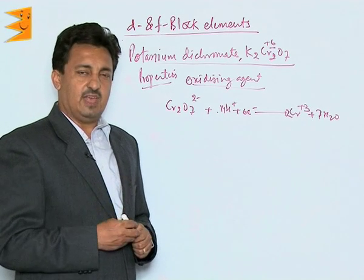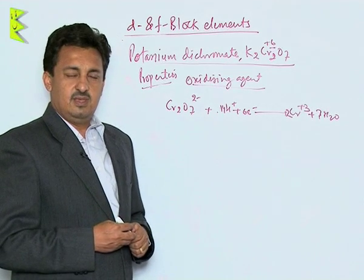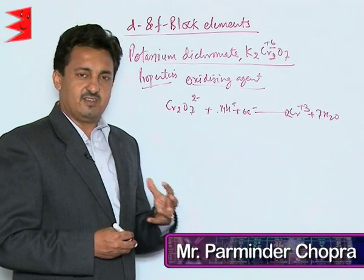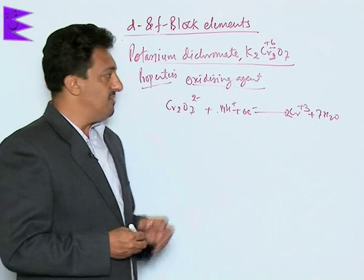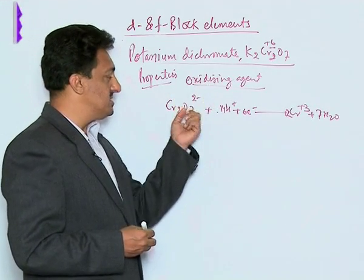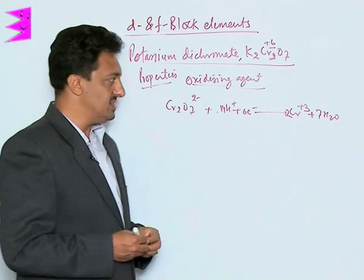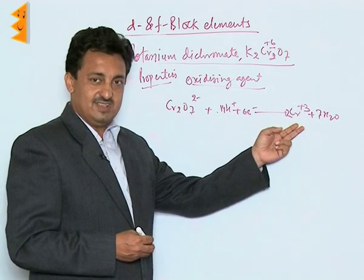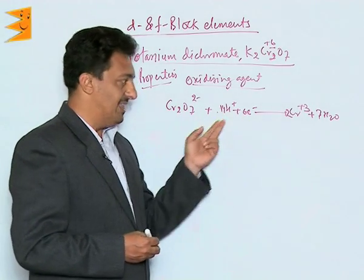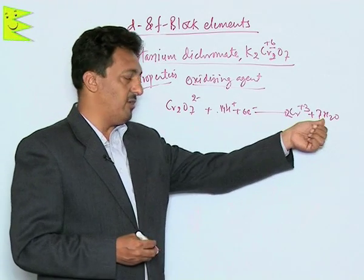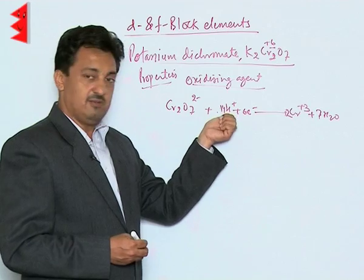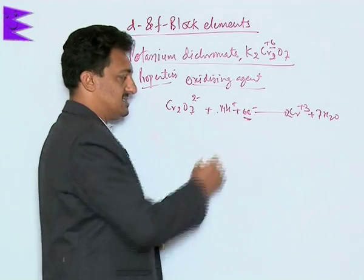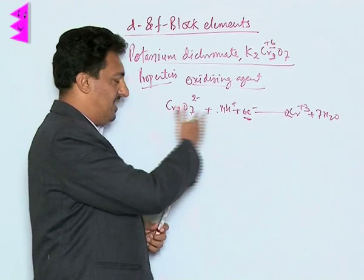The most important property of the dichromate ion is that it works as an oxidizing agent, because chromium is present in the +6 oxidation state. When we provide an acidic medium, chromium in dichromate gets reduced to +3 state. The balanced reaction has 7 water molecules, 14 H⁺ ions, and 6 electrons, so the n-factor for this is 6.